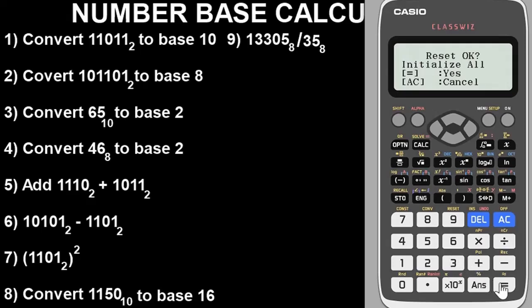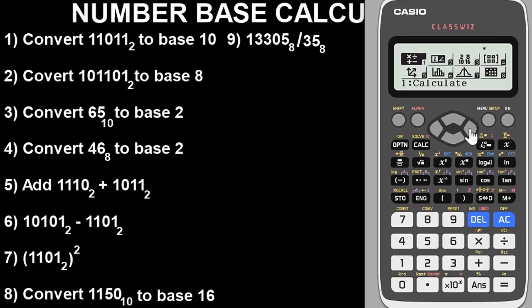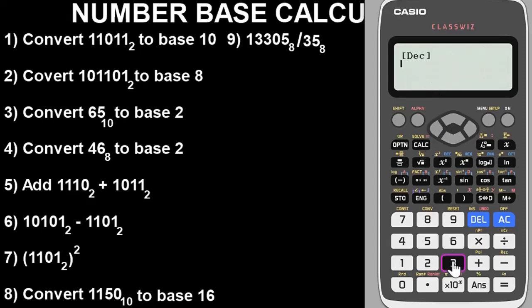Press the equals key to confirm, then press equals or AC again. We have now cleared the calculator. Having cleared it, the next important thing is to put it in Base mode, since we are dealing with number bases and binary numbers. To do that, go to Menu, then navigate to Base — that's option 13 — and select it. This is the mode that enables us to solve the problems we have here.